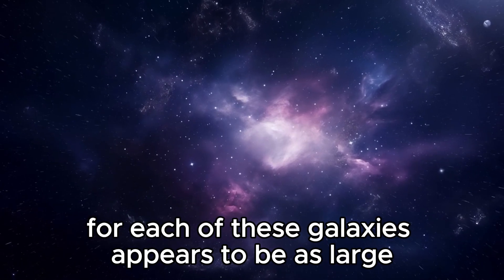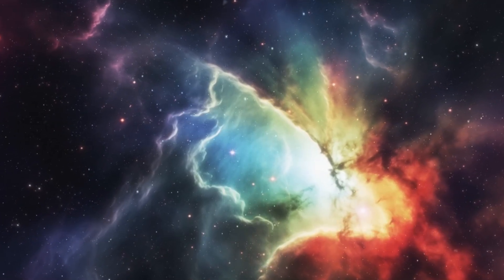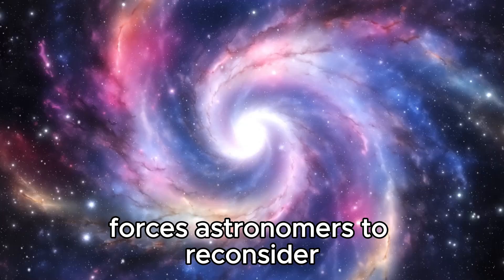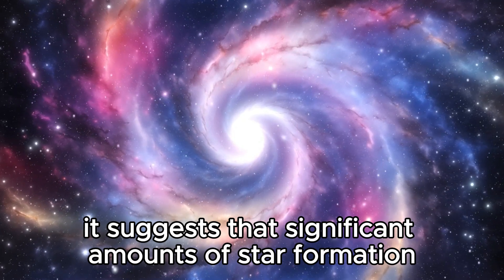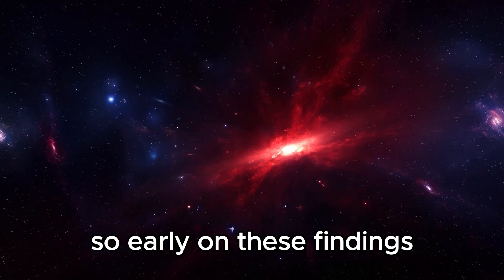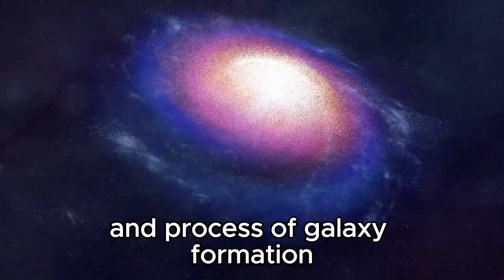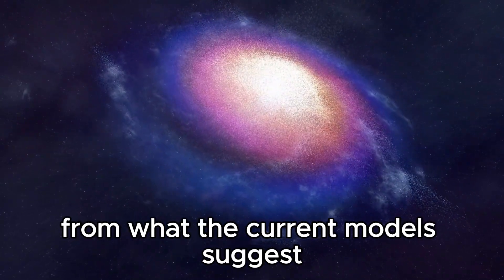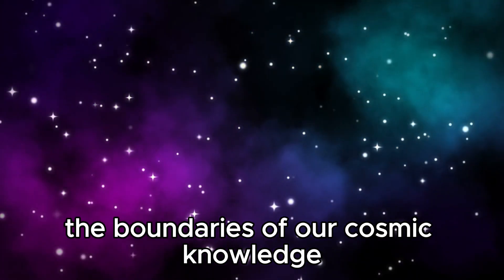For each of these galaxies appears to be as large and as mature as our own Milky Way, which is roughly 13 billion years old. This unexpected maturity of galaxies in what can be considered the cosmic dawn forces astronomers to reconsider the physics of early universe galaxy formation. It suggests that significant amounts of star formation must have happened very quickly to allow these galaxies to reach such a mature state so early on. These findings not only raise questions about the speed and process of galaxy formation but also hint at the possibility that the conditions in the early universe might have been different from what the current models suggest. Now, let's look at what the future holds as we continue to push the boundaries of our cosmic knowledge.